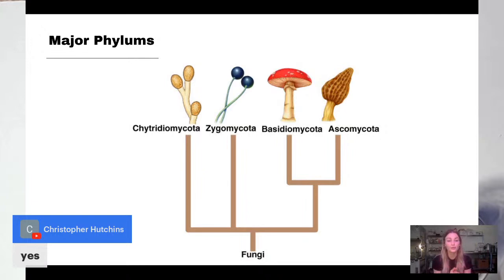Basidiomycota is the phylum that we're probably all most familiar with. It's the phylum that the three cultures you've got in your kit are from, and they're probably the most understood because they fruit mushrooms. The oyster mushrooms that you eat, the portobellos that you get at the store, most are basidiomycota. They're easy to work with.